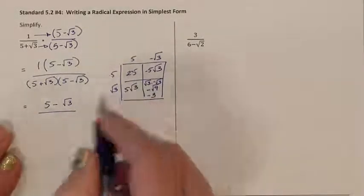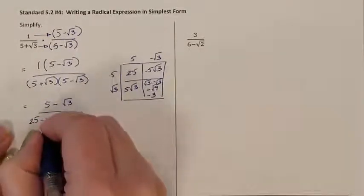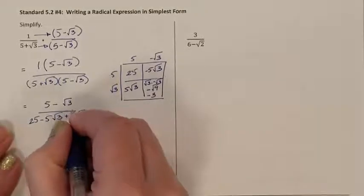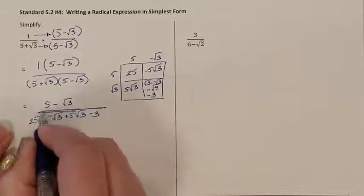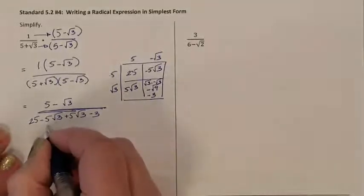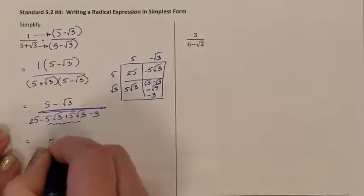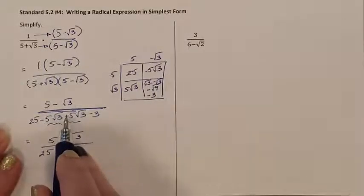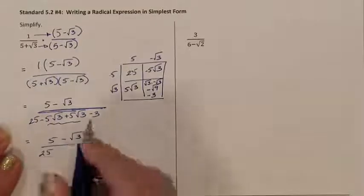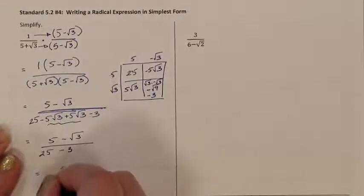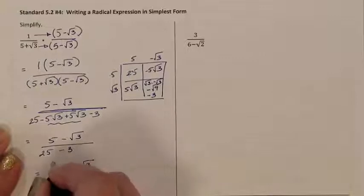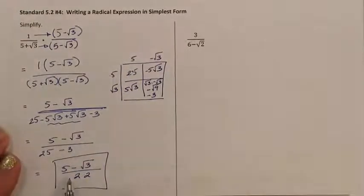So we have 25 minus 5 root 3 plus 5 root 3 minus 3 in the denominator. We need to combine like terms — root 3s can only go with root 3. Negative 5 root 3 plus 5 root 3 gives me 0, so we have 25 minus 3. The final answer is 5 minus the square root of 3, all over 22. I know it's the final answer because there is no more radical sign in the denominator.